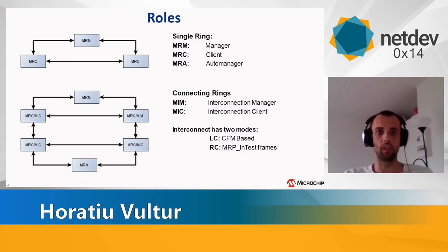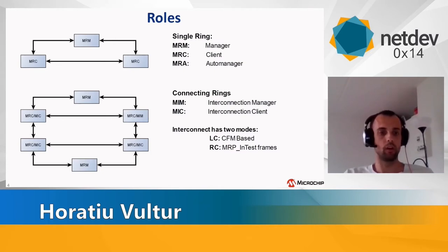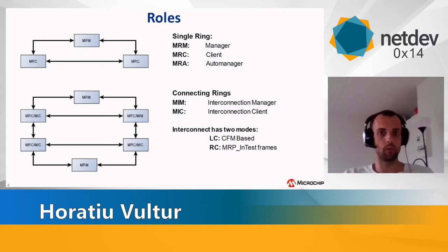We will talk about that a little bit later. In the lower picture we see two rings where there are two MRMs and one interconnect ring formed out of four nodes. They have interconnect roles like interconnect manager and interconnect client. In an interconnect ring there are always four nodes — one interconnect manager and three interconnect clients. There are two modes for this interconnect ring to operate: one is link check mode, where it sends CCM frames, and the other is ring check mode, where it sends interconnect test frames.